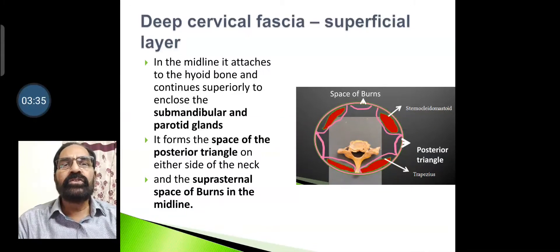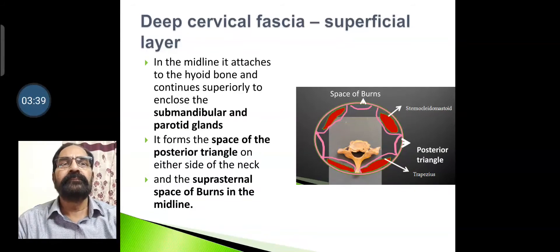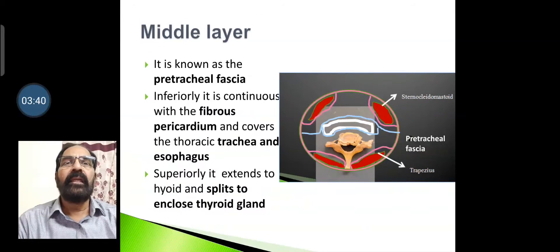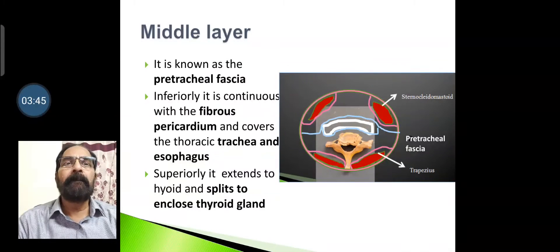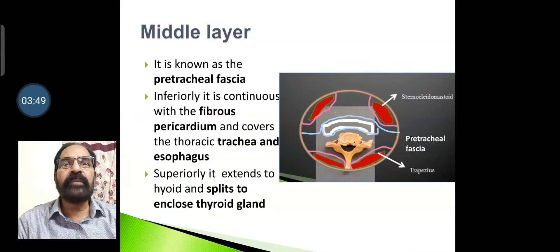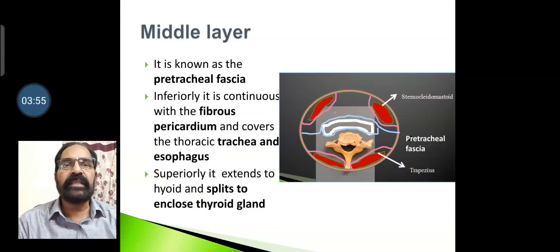The investing layer also forms the supra-sternal space of Burns in the midline. The middle layer, also known as the pretracheal fascia, is continuous inferiorly with the fibrous pericardium, and covers the thoracic trachea and esophagus.